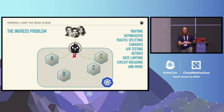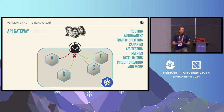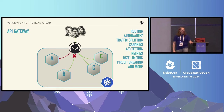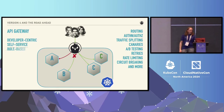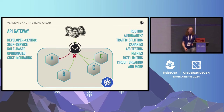We can do rate limiting and circuit breaking and a bunch of other stuff that doesn't fit easily on slides. The fact that Emissary gets to do all this shifts it from being just an Ingress controller into being an API gateway. Emissary is a developer-centric, self-service, role-based, very opinionated API gateway that is a CNCF incubating project.